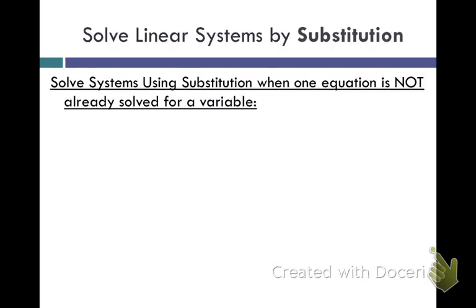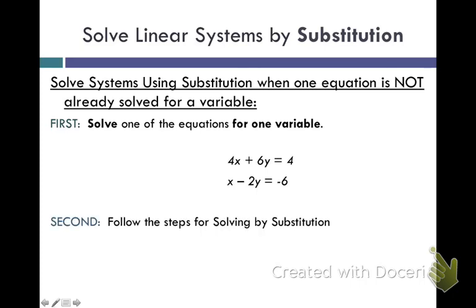Solve systems using substitution when one equation is not already solved for a variable. Our first step in the last video was to find an equation that was solved for a variable. Well, if you don't have one that's already solved for a variable, then you have to solve one of the equations for a variable. Make sure that you are picking the easiest one. The one that we looked at right here, we've got 4x plus 6y equals 4, and x minus 2y equals negative 6. What I'm looking for is a variable that's by itself, that has no numbers around it. If I can find that, I'm going to solve for that one. So, probably this particular one, I would solve this one for x.